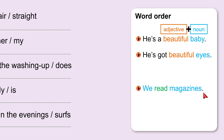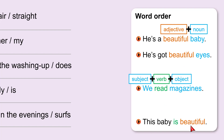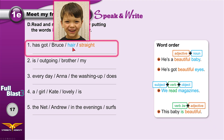Here is a different structure: subject, verb, then object. Subjects and objects are also nouns or pronouns. For example: the baby reads magazines — subject, verb, object. We can also use the verb be — am, is, or are — before an adjective. The baby is beautiful. All babies are beautiful.